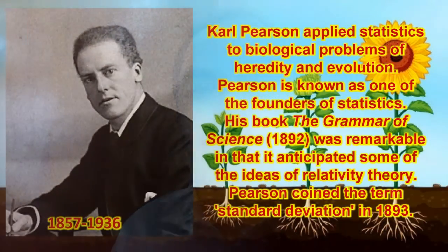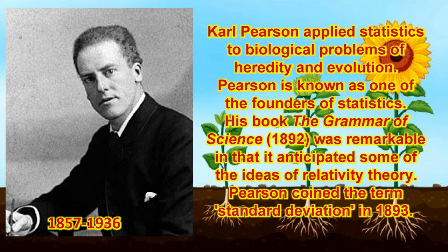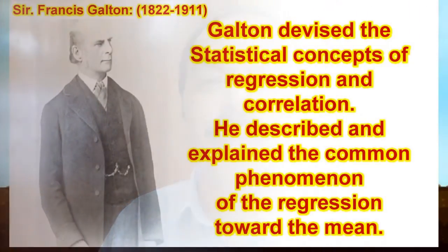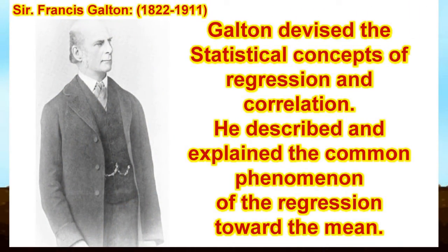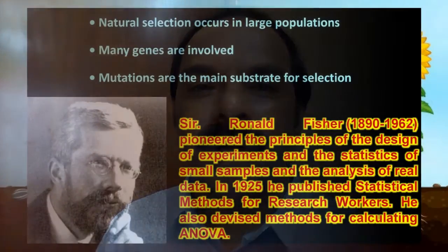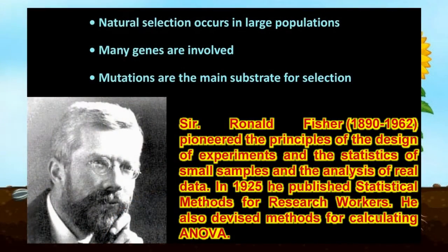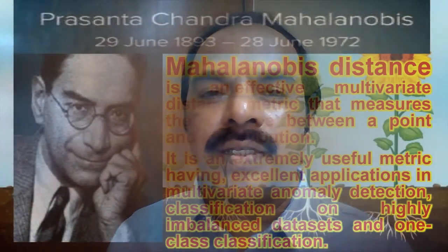Ronald Fisher, and Francis Galton. The main contributions of Karl Pearson are kurtosis and the chi-square test. Correlation and regression were studied by Francis Galton. ANOVA — analysis of variance — and experimental studies were done by Ronald Fisher, who also criticized the work of Mendel.